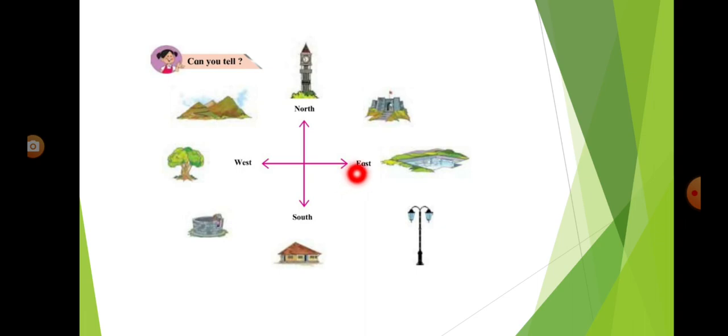In the east, you can see the house over here. To the west, you can see the tree. In the north, towards the north, you can see this clock. And to the south, you can see the house.